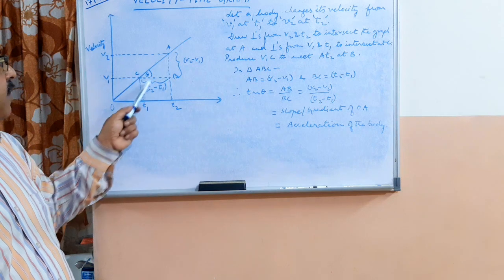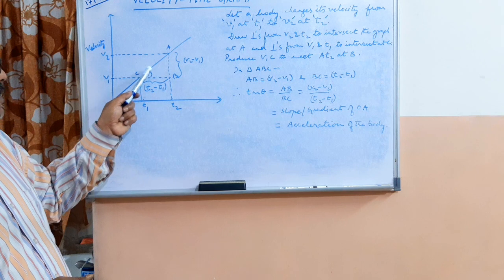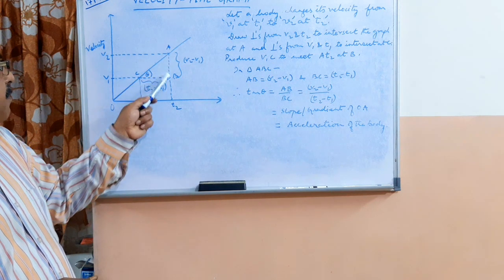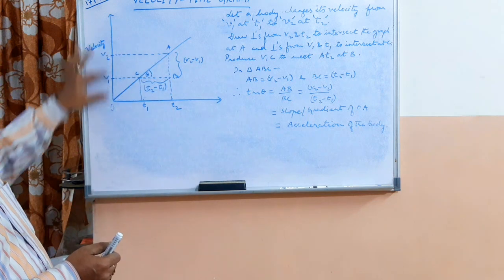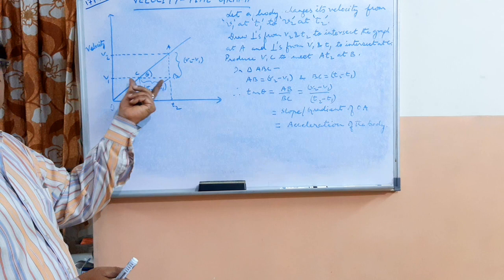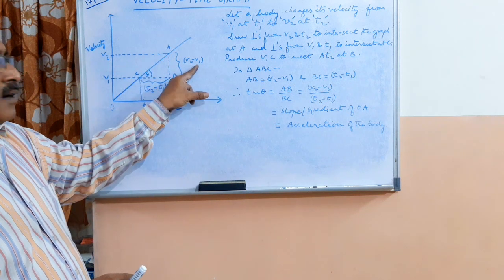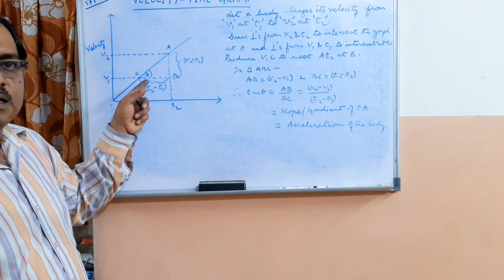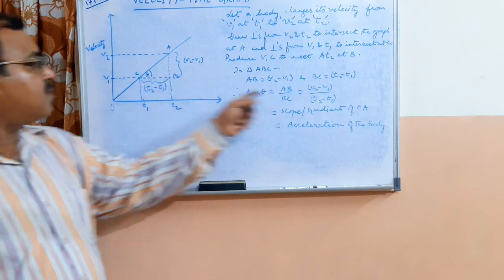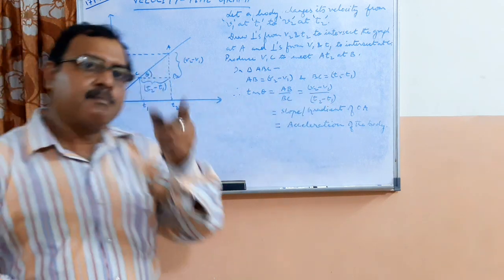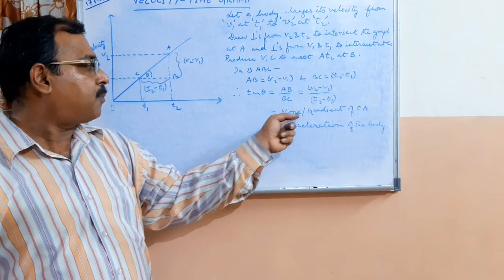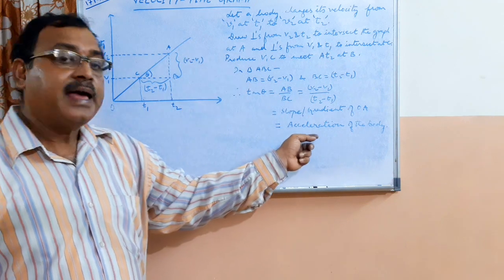In triangle ABC, suppose the angle is theta. AB is represented by v2 minus v1, and BC is represented by t2 minus t1. So tan theta equals AB over BC, which is v2 minus v1 over t2 minus t1. Just as we found the slope in distance-time and displacement-time graphs, here we are finding the slope of the velocity-time graph. The slope of OA — the velocity-time graph — gives the acceleration of the body. This graph represents uniform acceleration.